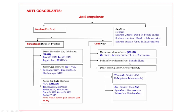Next, indandione derivatives — the drug is phenindione. Last one, direct clotting factor blockers. These are divided into two types — bold letters T and X. T means thrombin blocker, X means 10A blocker.